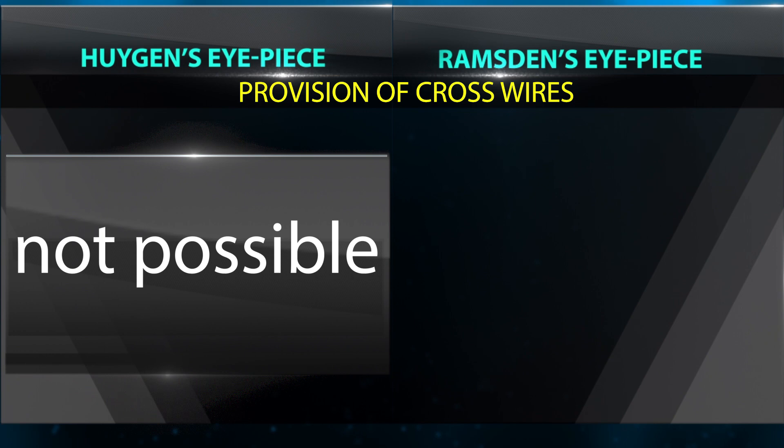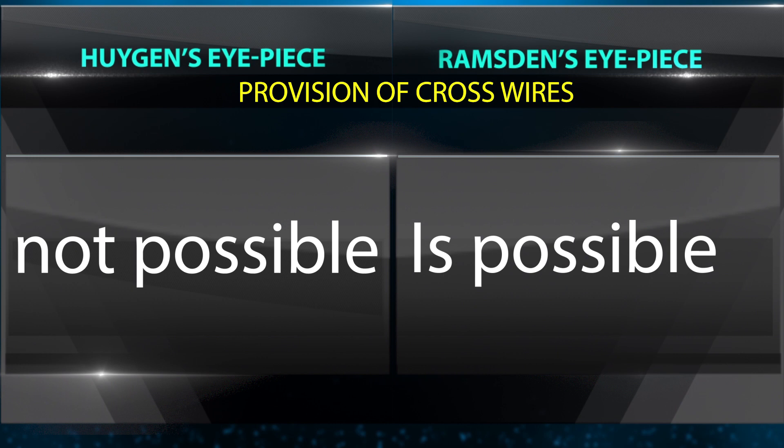Provision of cross wires: In the Huygens eyepiece, provision of cross wires is not possible. In the Ramsden eyepiece, provision of cross wires is possible.